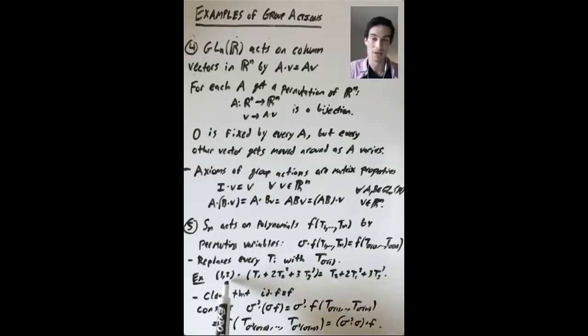So to give a really concrete example, let's take the permutation (1,2), acting on the polynomial t1 plus 2t2 squared plus 3t3 cubed. Everywhere I see a t1, I'm just going to put in a t2. Everywhere I see a t2, I'm just going to put in a t1. And this is what we get: t2 plus 2t1 squared plus 3t3 cubed.